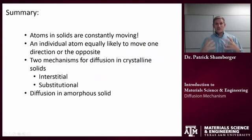Okay, in summary, atoms and solids are constantly moving. That's what allows them to diffuse around. Individual atoms are going to be equally likely to move in one direction or another. We talked about two mechanisms, interstitial and substitutional. Substitutional requires a vacancy for this mechanism to happen, right? For this substitutional atom to diffuse from one site to another, there needs to be a vacancy on that site. Finally, we talked about diffusion in amorphous solids, and it certainly happens, but we don't refer to it in terms of these terms because those are specifically referring to a material that's on a fixed crystal lattice.